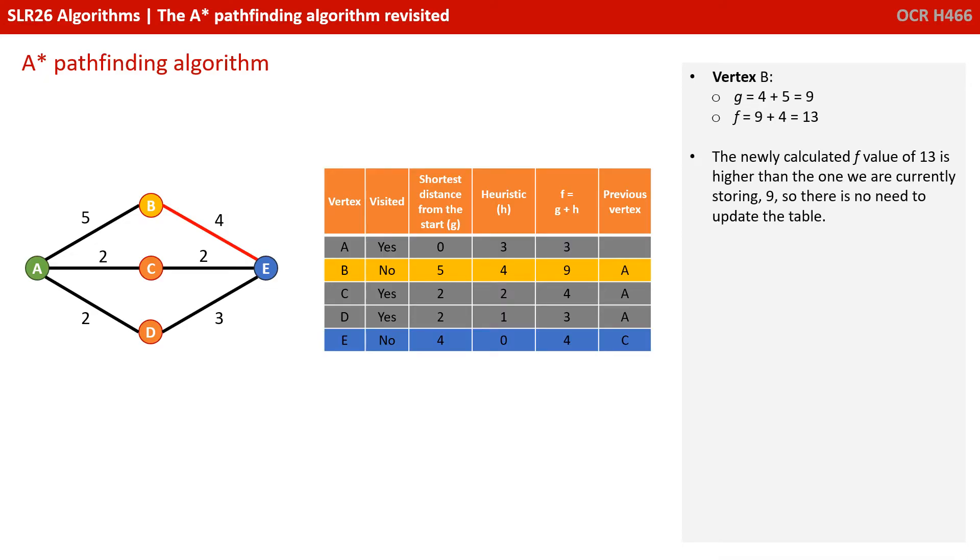So we recalculate the F value for B. That's E's G value of 4, plus B's distance from the start of 5 gives us 9, plus the existing heuristic of 4. So 9 plus 4 gives us 13. Well, the newly calculated F value of 13 is clearly higher than the one we're currently storing of 9, so there's no need to update the table at this point.